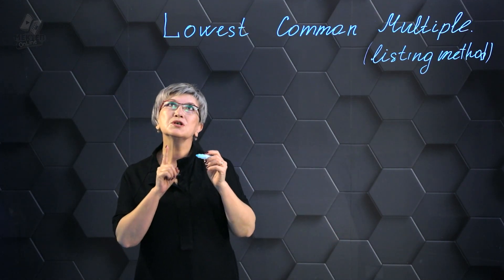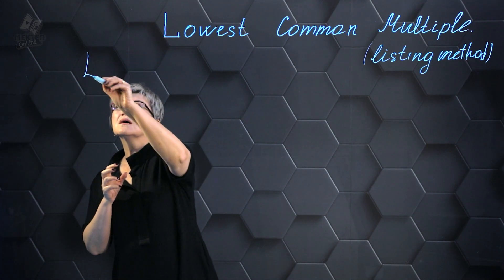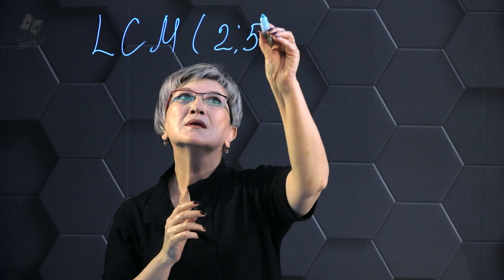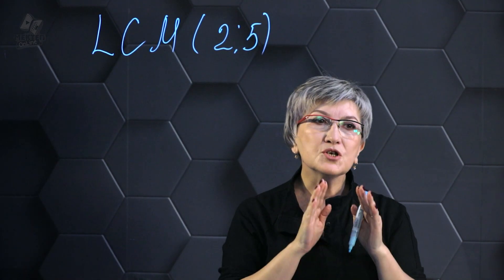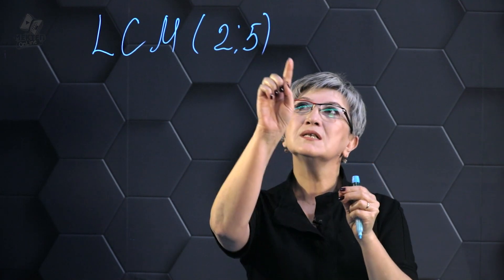If we need to find the least common multiple, it is written using this abbreviation: LCM. We need to find the LCM of numbers 2 and 5. Let's remember together what multiple means in general.